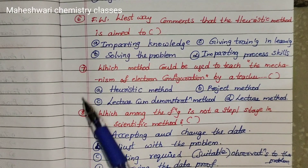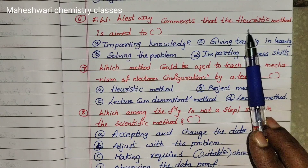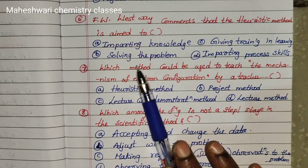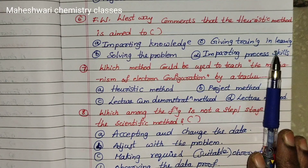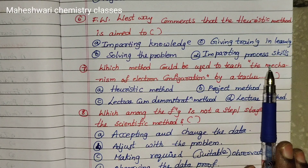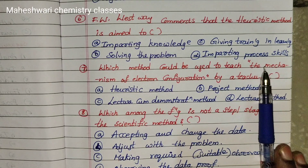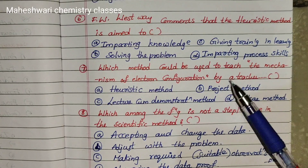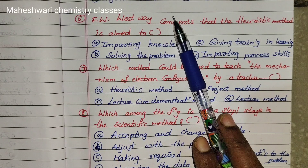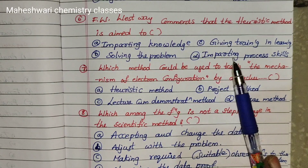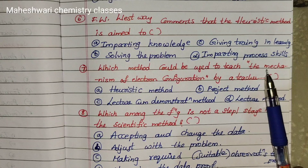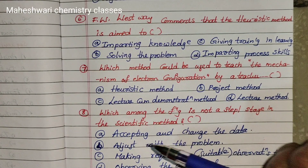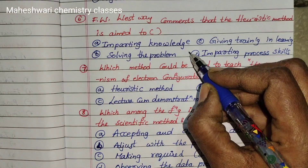Sixth question: F.W. Westaway comments that the heuristic method is which of the following? Options are: Imparting knowledge, Solving the problem, Giving training and learning, Imparting process skills. The main importance of the heuristic method is imparting process skills. Sixth one is directly option D.